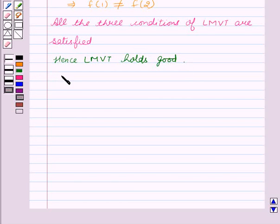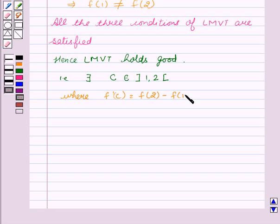That is, there exists a point C, which is the element of open interval (1, 2), where F'(C) equal to F(2) minus F(1) upon 2 minus 1. This is our first equation.